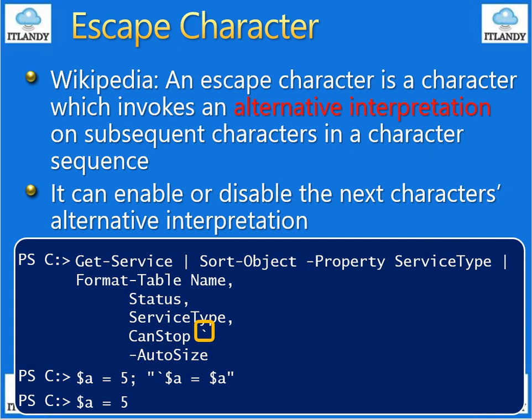Now, indicating a literal — when the escape character precedes a variable, it prevents a value from being substituted for that variable. When the escape character precedes a double quotation mark, Windows PowerShell interprets the double quotation mark as a character, not as a string delimiter. The second use is indicating line continuation — the escape character tells Windows PowerShell to continue the command on the next line. And when indicating special characters used with quotation marks, the escape character indicates special characters that provide instruction to the command parser.